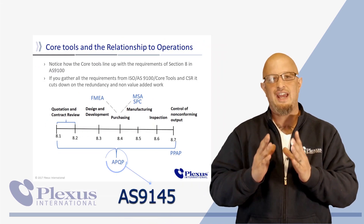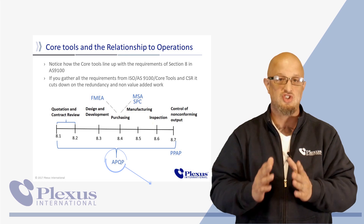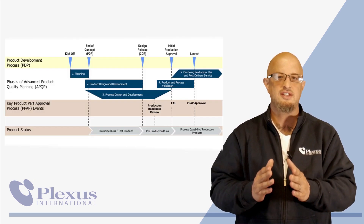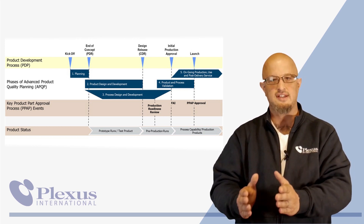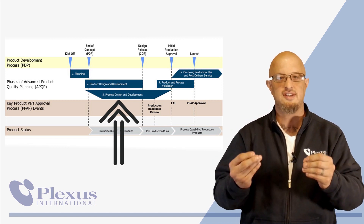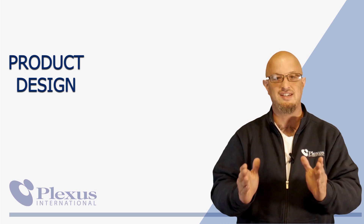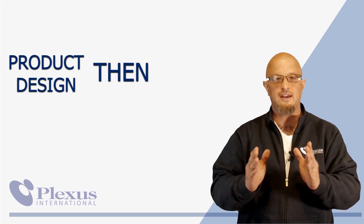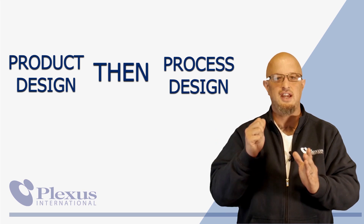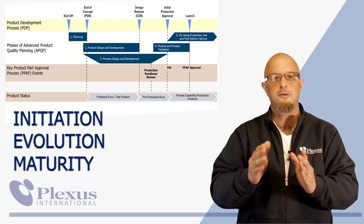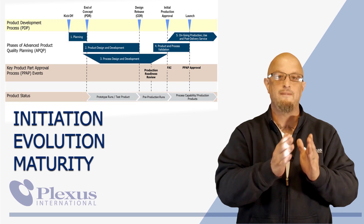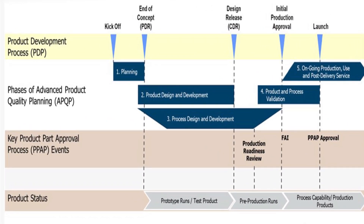AS9145 is laid out in five distinct phases, and the big selling point is simultaneous engineering between product and process. In the past, product design and process design had largely been thought of as separate entities. In AS9145, both product and process initiate together, evolve together, and mature together, in order to get a product that is not only the right fit, form, and function, but also manufacturable.